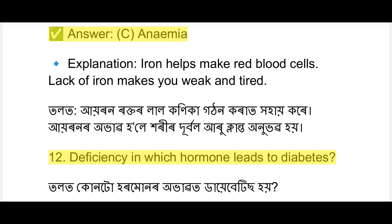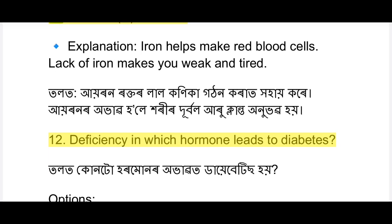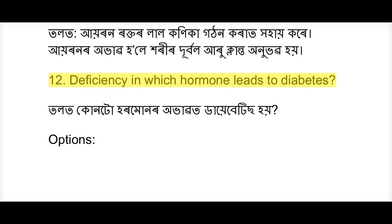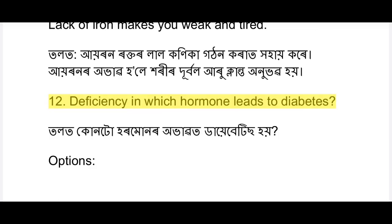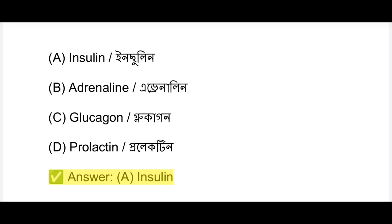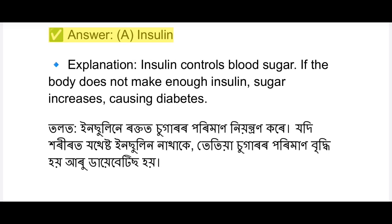RBC - red blood cells - have a lifespan of 120 days. Iron helps make red blood cells; lack of iron makes you weak and tired. Next: deficiency of which hormone leads to diabetes? Insulin controls blood sugar. If the body does not make enough insulin, blood sugar increases and causes diabetes.